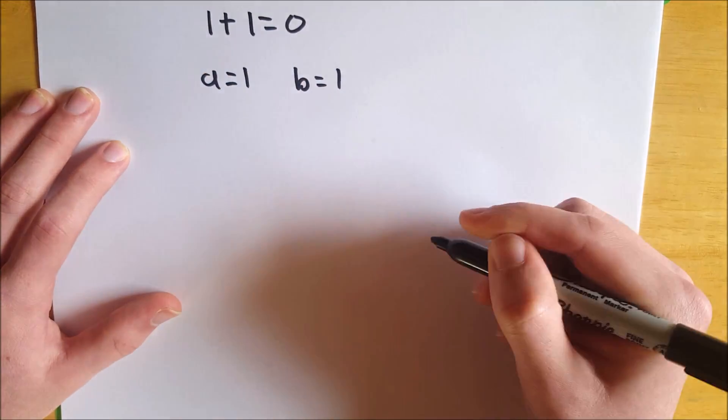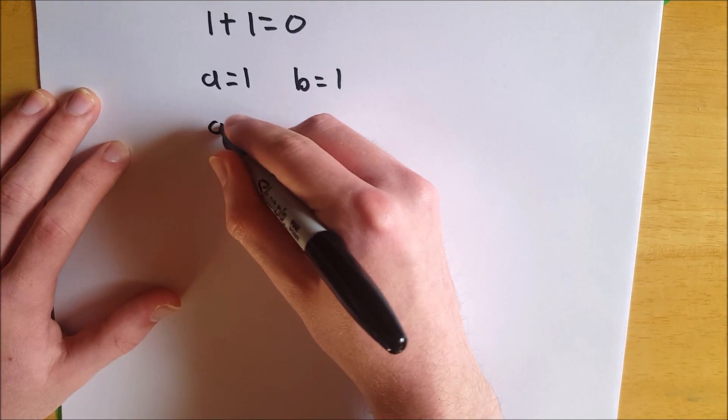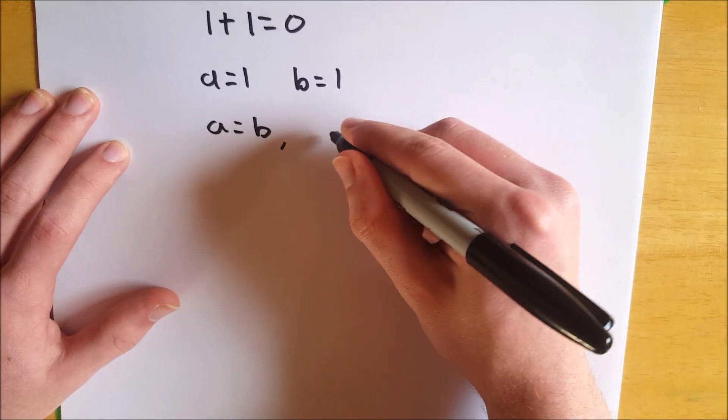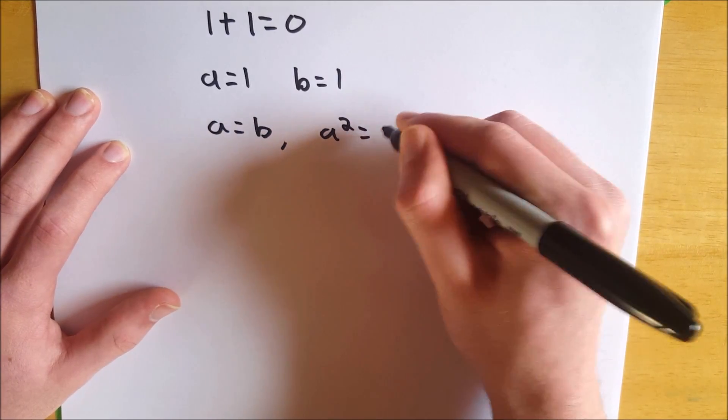So we're going to suppose that A equals 1 and B equals 1, and we can just let that be true. So then, A must equal B, because 1 equals 1. Now we can square both sides and get A squared equals B squared.